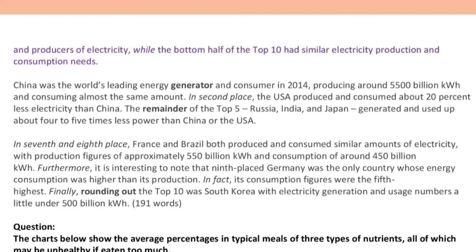In second place, the USA produced and consumed about 20% less electricity than China. The remainder of the top five — Russia, India and Japan — generated and used up about 4 to 5 times less power than China or the USA. In seventh and eighth place, France and Brazil both produced and consumed similar amounts of electricity, with production figures of approximately 550 billion kilowatt-hours and consumption of around 450 billion kilowatt-hours.